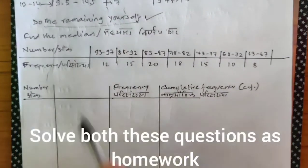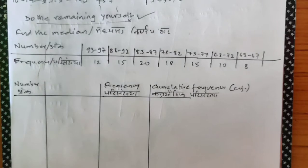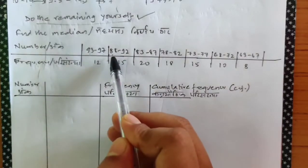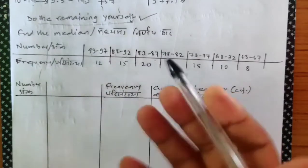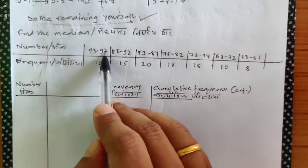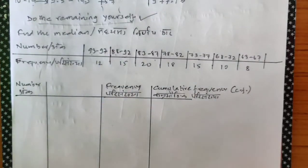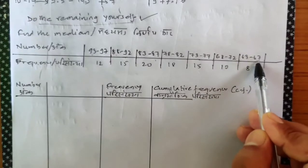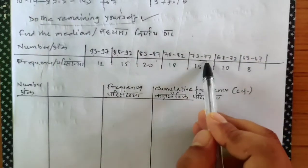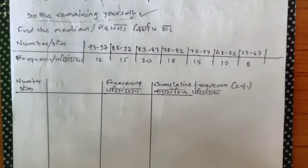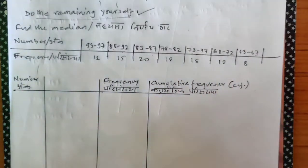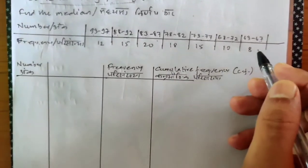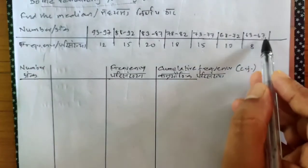Check the next one — find the median. A table is supplied with intervals: 93 to 97, then 88 to 92, then 83 to 87. We're not used to seeing this kind of descending interval. Relax — whenever you see this, don't be confused. Look from the other side: 63 to 67, then 68 to 72, then 73 to 77. If you see it this way it's just like the normal intervals we've already done.